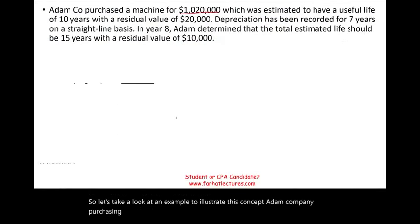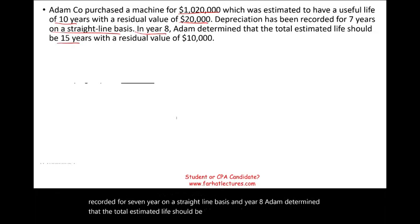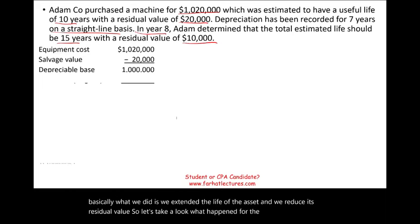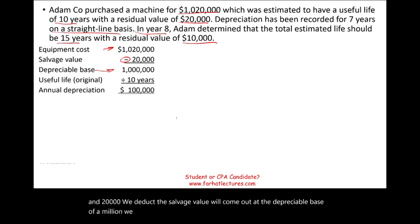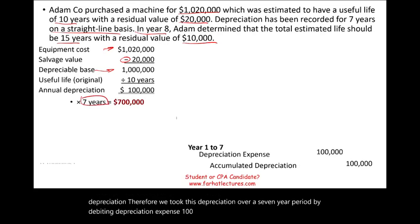Atom Company purchased a machine for $1,020,000, estimated to have a useful life of 10 years with a residual value of $20,000. Depreciation has been recorded for seven years on a straight-line basis. In year eight, Atom determined the total estimated life should be 15 years and the residual value should be $10,000. For the first seven years, the depreciable base was $1,000,000 ($1,020,000 minus $20,000), divided by 10 years, giving $100,000 of annual depreciation — totaling $700,000 over seven years.